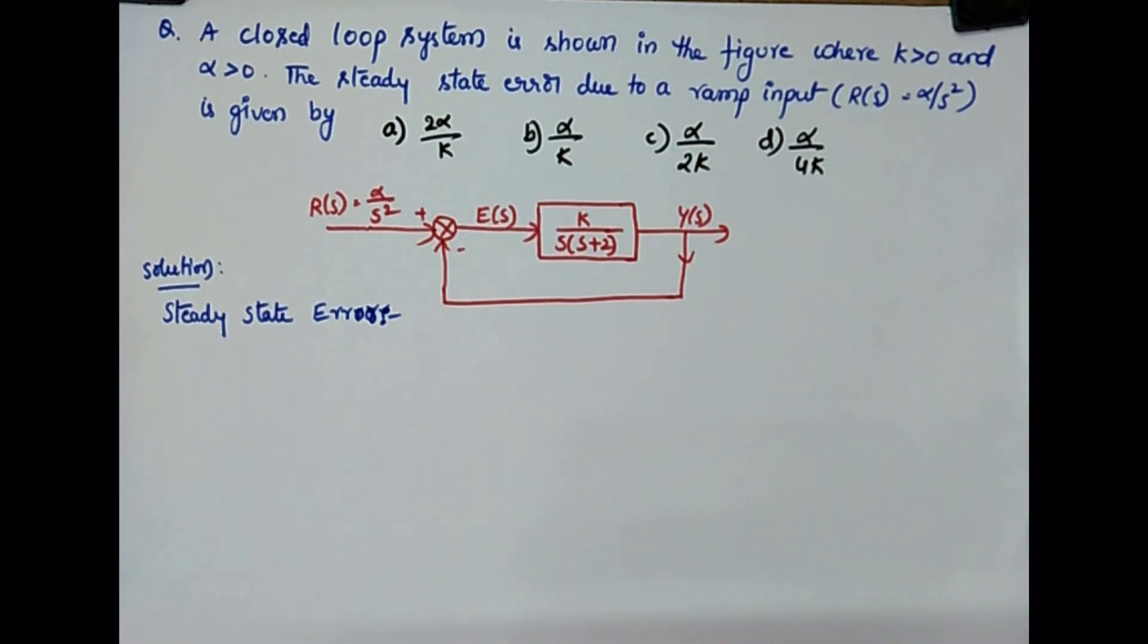The steady-state error explains the difference between actual output and desired output. Once it describes how the control system is deviating from its desired output.